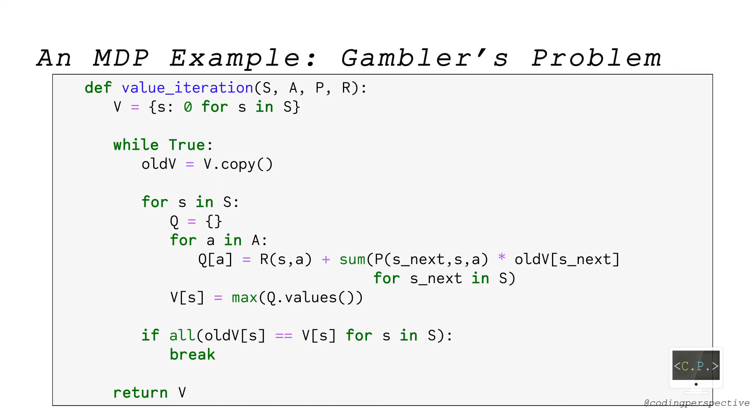Before showing the outputs, I will modify value iteration function so that we can obtain the optimal policy along with the value functions. We initialize a dictionary called optimal_policy where the keys are the states. Then, we update this dictionary whenever we update the value function by finding the action that maximizes Q. And, we return optimal_policy as an output.